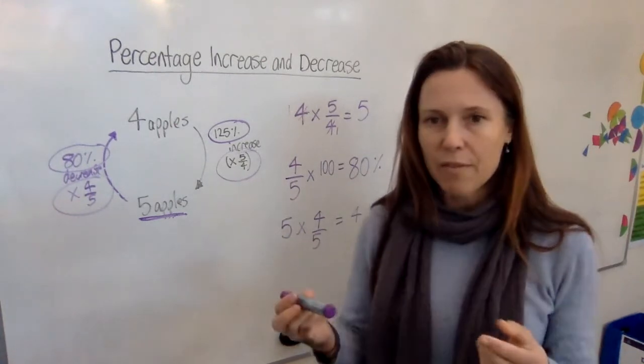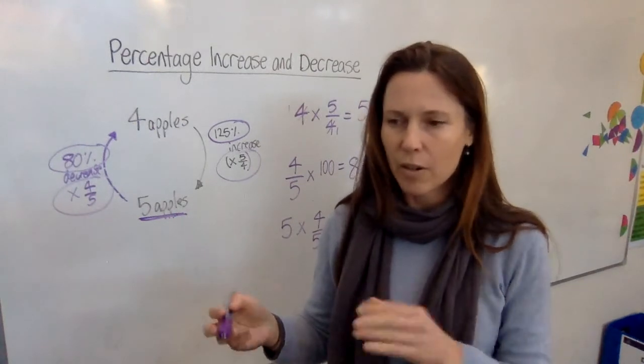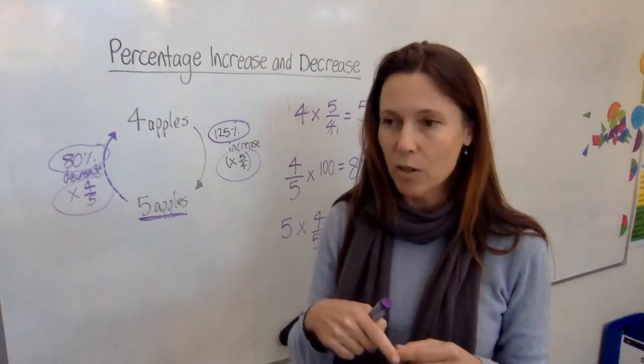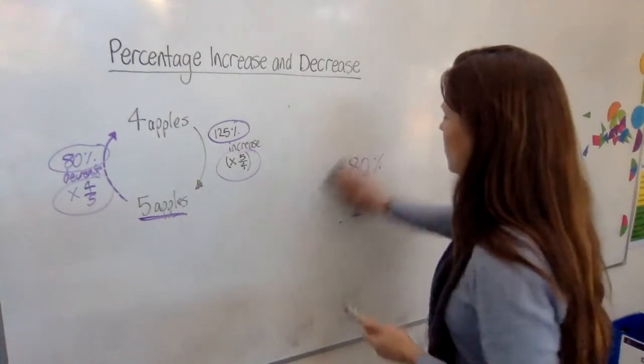It also explains why a lot of adults have a lot of trouble making these sorts of conversions. I'll give you an example. People often think that if they've increased something by 50%, and then they've changed their mind and say, no, no, no, I want to put it back to the size that it was. They say, oh, I'll just find 50% of what I have now. And that's not correct. Let's have a look at why.